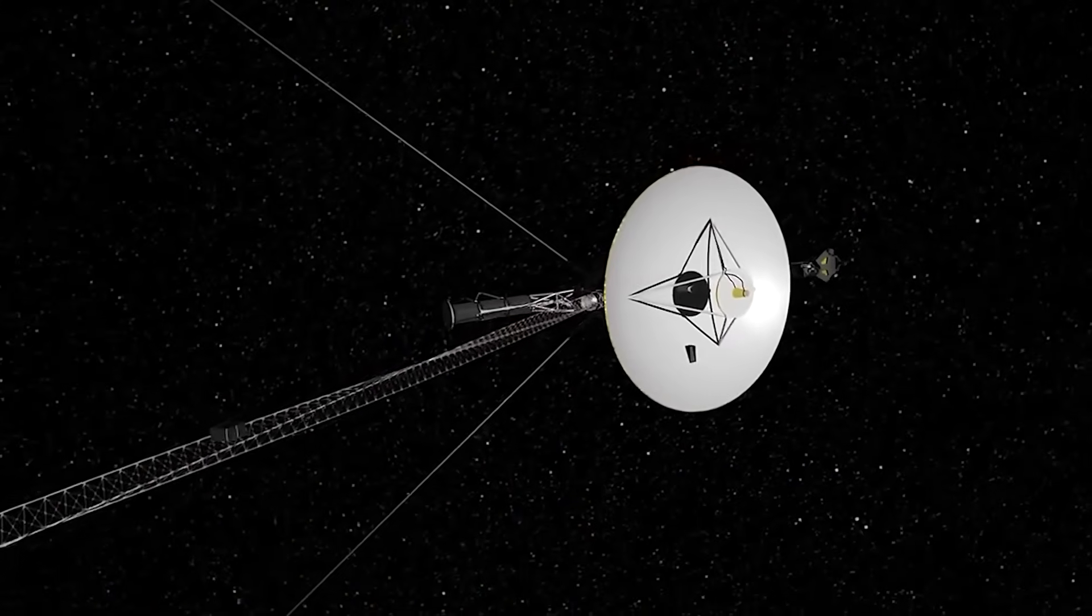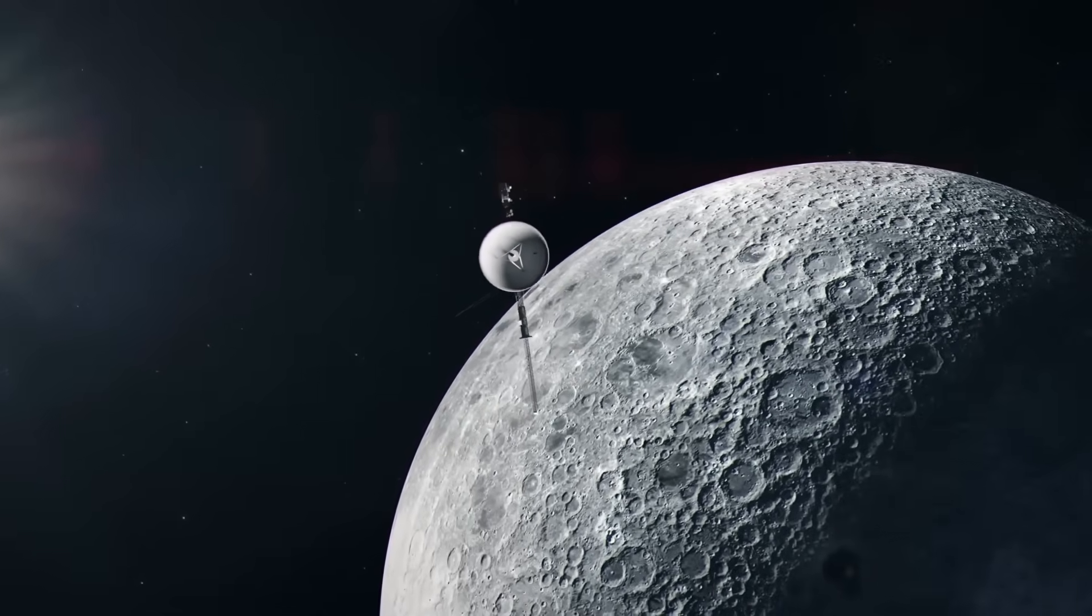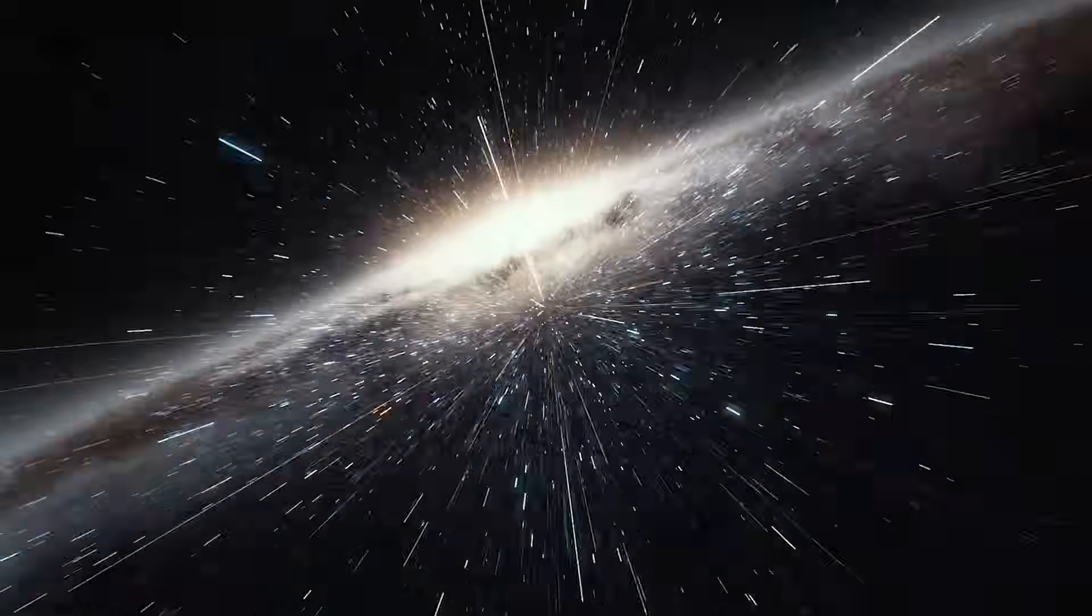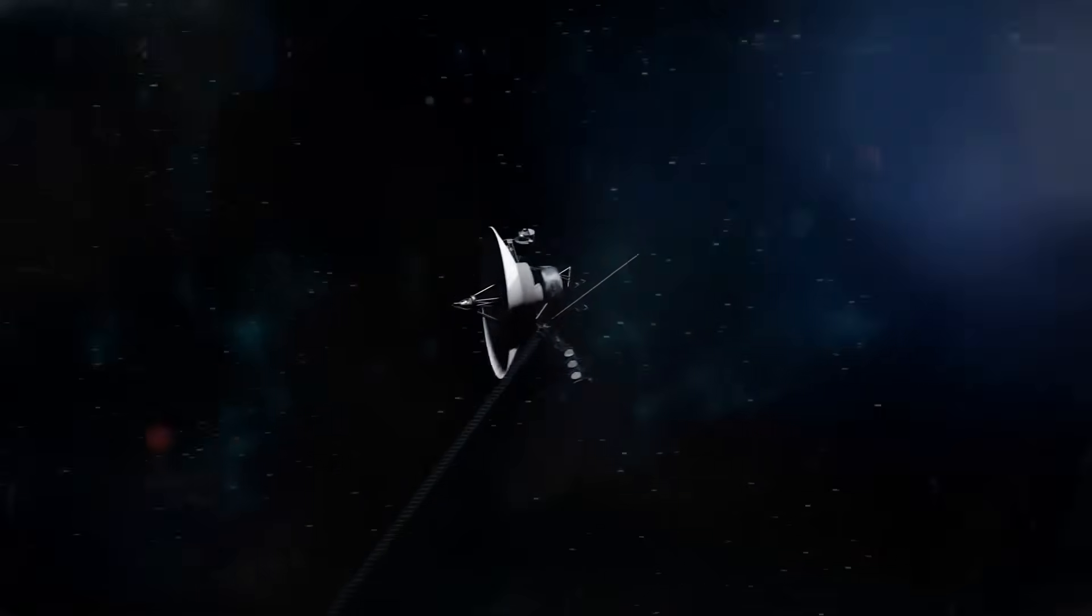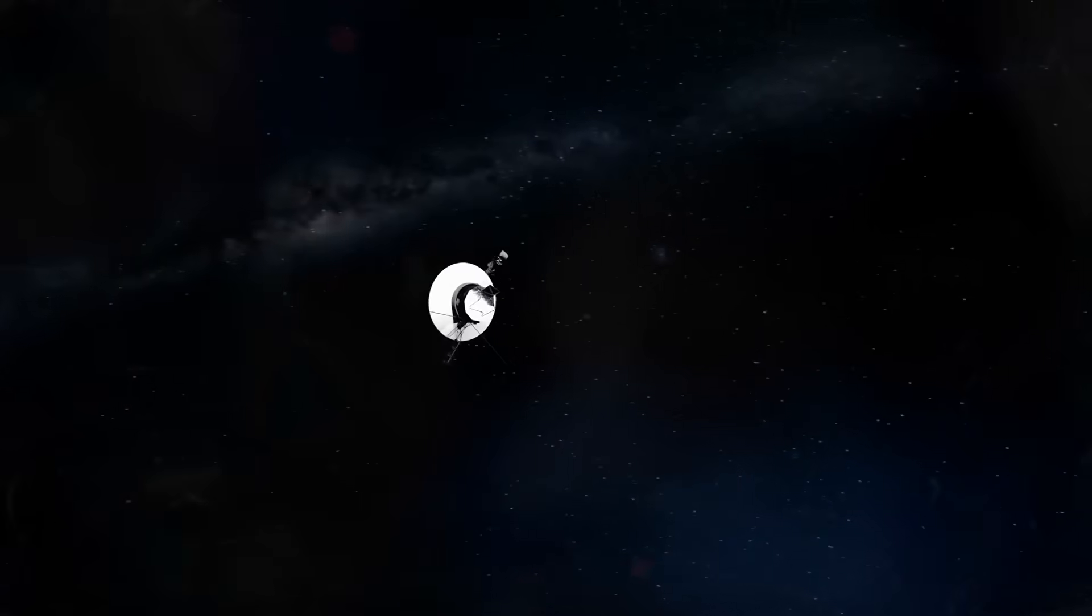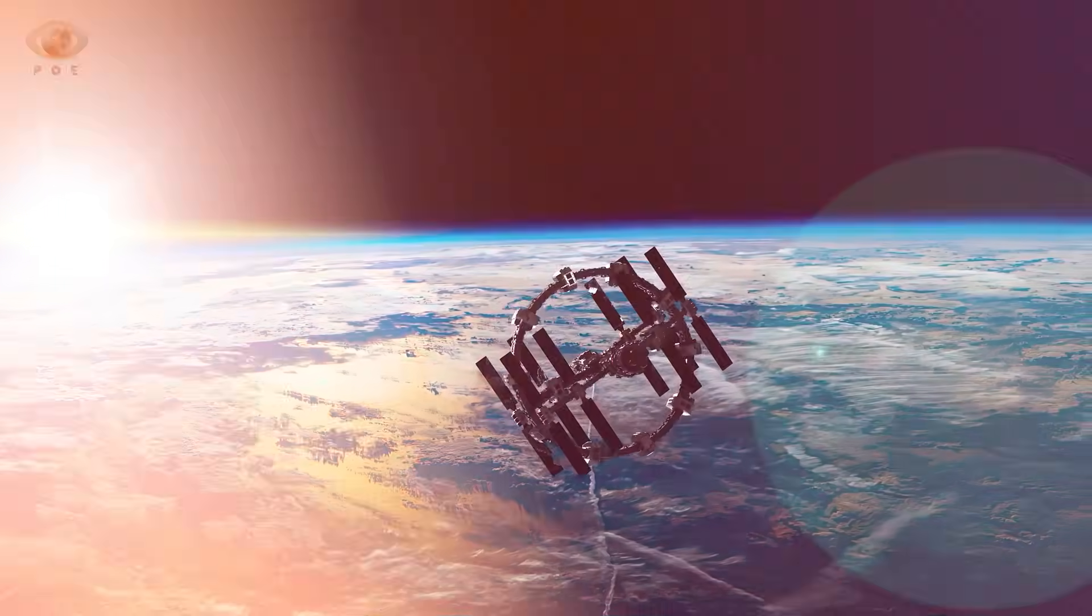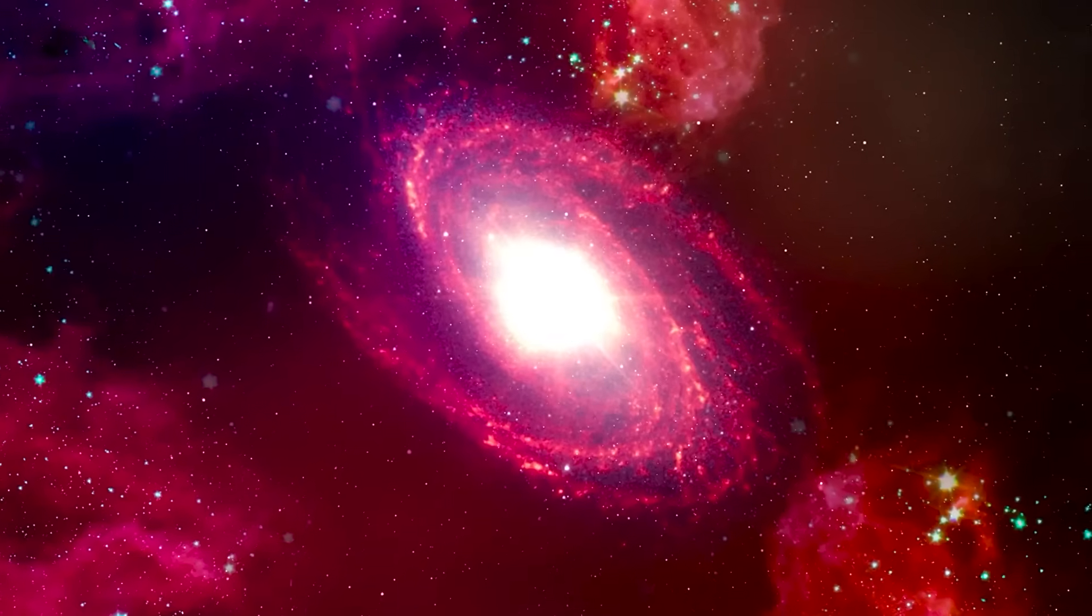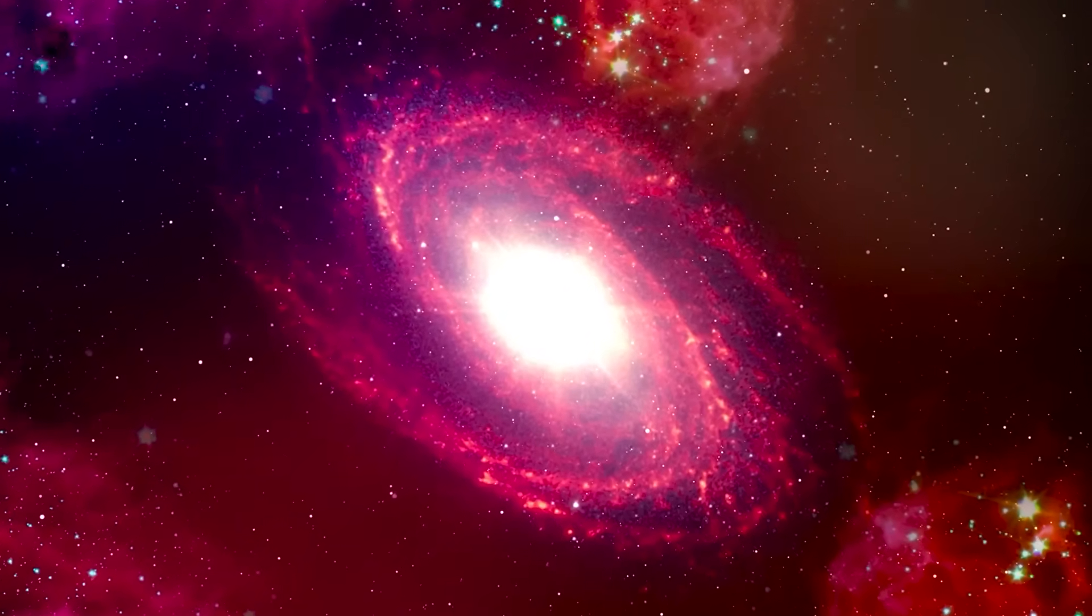For decades, Voyager 1 has floated through the cosmos as our silent messenger. A bottle cast into the galactic sea carrying our voice across the stars. But maybe that bottle didn't just drift. Maybe it was found. And maybe the response has finally arrived. What Voyager 1 experienced in deep space—an impossible signal, an artificial rhythm, a reaction that breaks our understanding of physics—wasn't just random noise. It was deliberate, structured, purposeful. And then, just like that, silence. As if whatever was out there wanted to remind us of its presence but not yet reveal its full intentions.